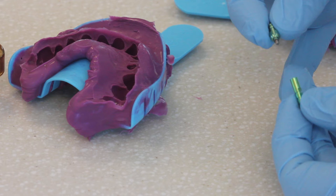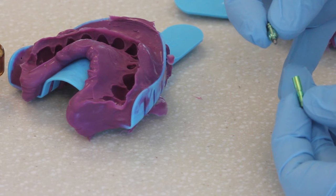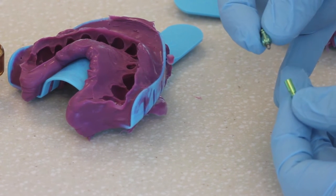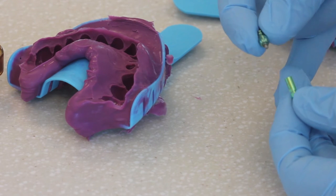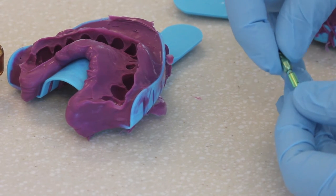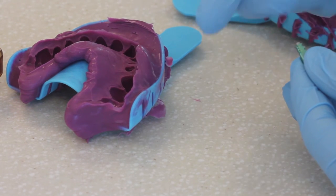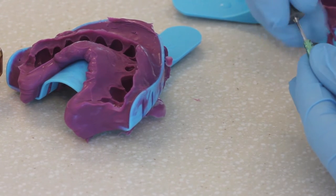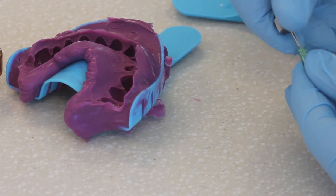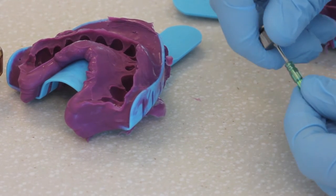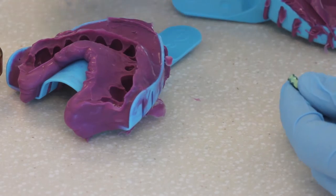You're also going to unscrew the impression coping from the implant and replace the healing abutment. At this stage, once everything is out of the mouth, you want to reattach the impression coping onto the implant analog. Remember, the implant analog is intended to mimic the implant in our master cast. Tighten that together.